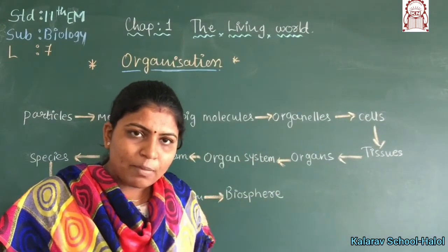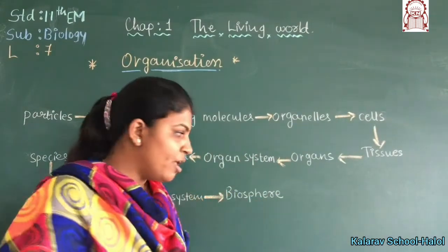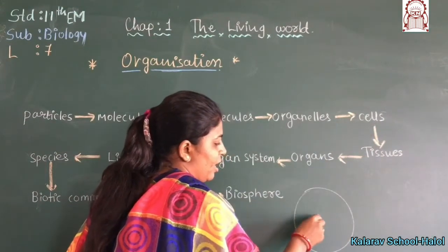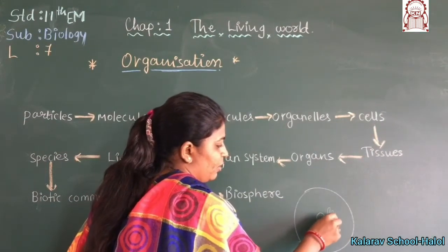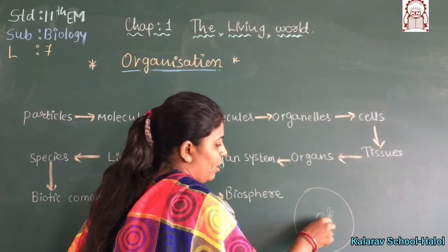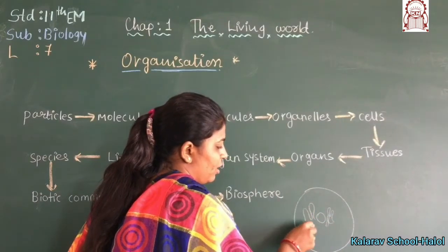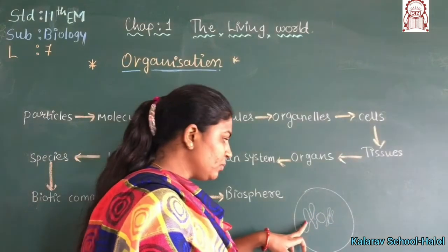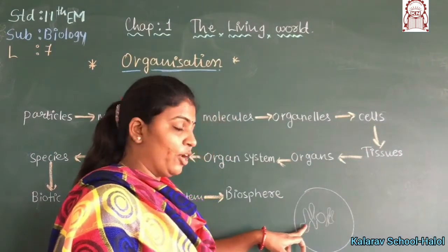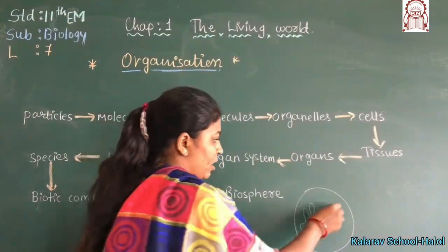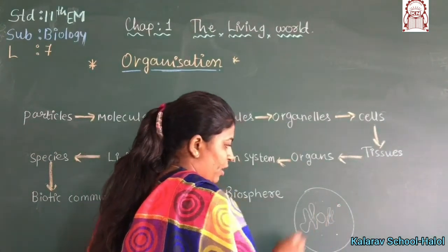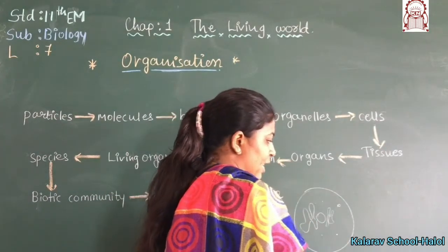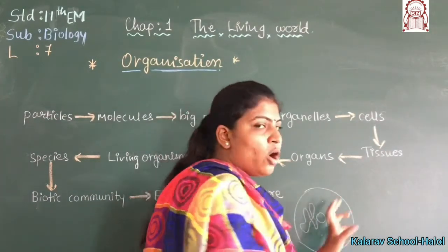So what is a cell? A cell contains a nucleus, mitochondria, and various other organelles. All these organelles are combined together within the cell.